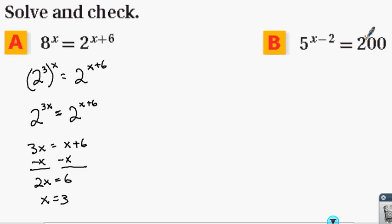and 5 to the 4th is 625. So rewriting 200 as 5 to some power is not feasible for an exact amount. What we're going to do is try a different method. We're going to take the logarithm of both sides of the equation.